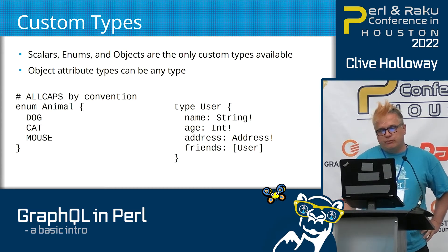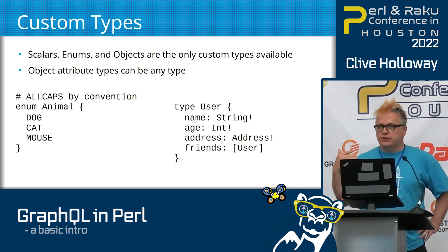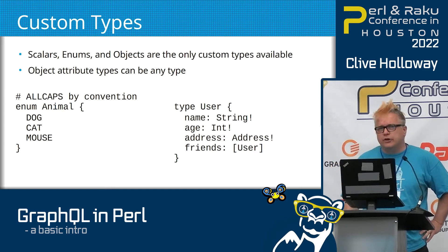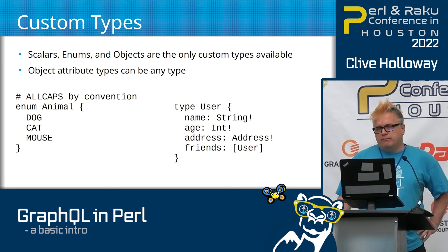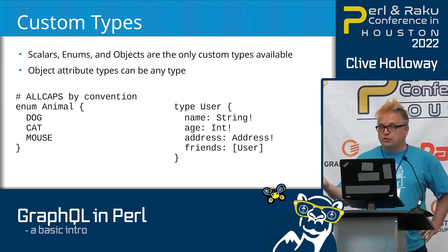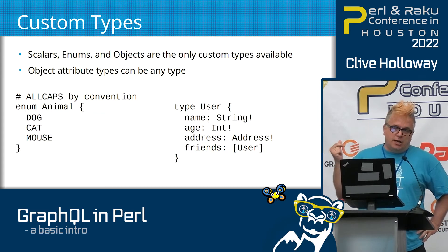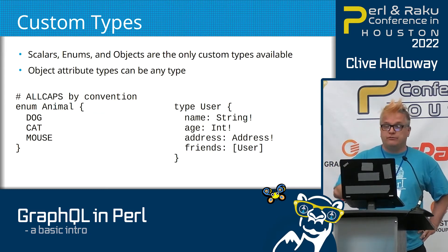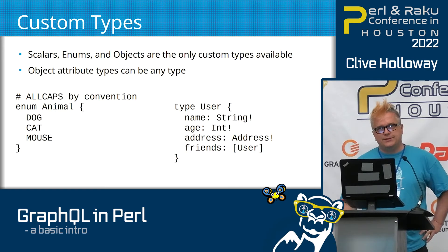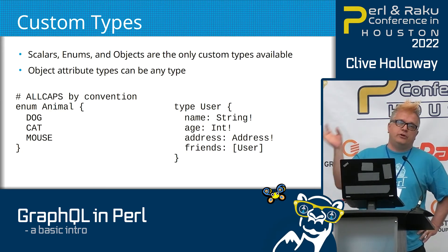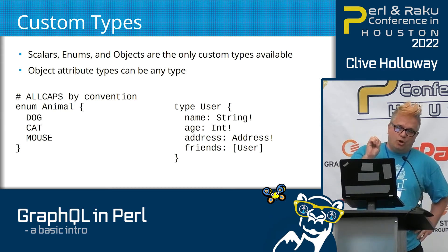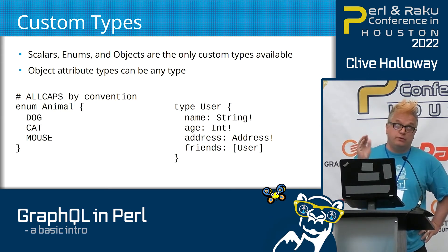When you create your own types, there are three key ones you can use. Scalars — which you might use if you wanted a datetime type, for example, you can create your own. Enums, which by convention use all caps, though I don't think case really matters when you're actually using them. And then objects, which is where you get the real power. The example on the right here — I'm saying there's a user type that has a name, which is a string, and the exclamation mark afterwards means it's required. The age and address are also required, and the address would be another type that I would define. The last one, friends, is an array — you can also use an exclamation mark either after the internal object to say it's required to be non-null, or after the array to require the actual response.